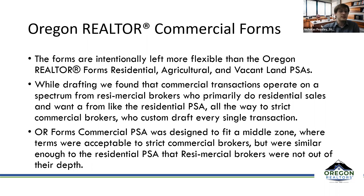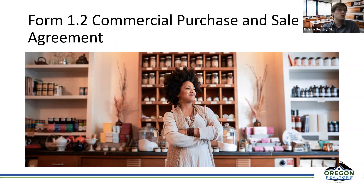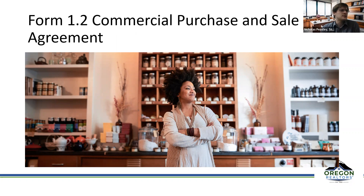The Oregon forms commercial PSA is designed to fit that middle zone — between really commercial and really residential, what we're calling the resumersial broker. It's similar enough that you'll feel comfortable, but different enough that you can still do a commercial transaction. We're starting with form 1.2. You can pull it up on orforms.org — go to the forms tab in the top right and preview form 1.2. Katie can also send out the PDF so you can follow along.